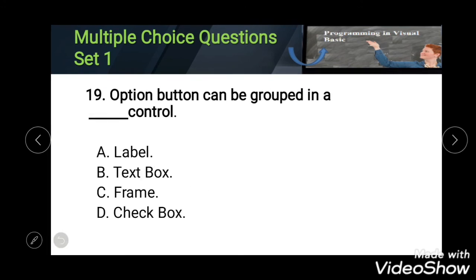Nineteenth: option button can be grouped in a blank control. Options: Label, Text Box, Frame, and Check Boxes. The answer is Frame.